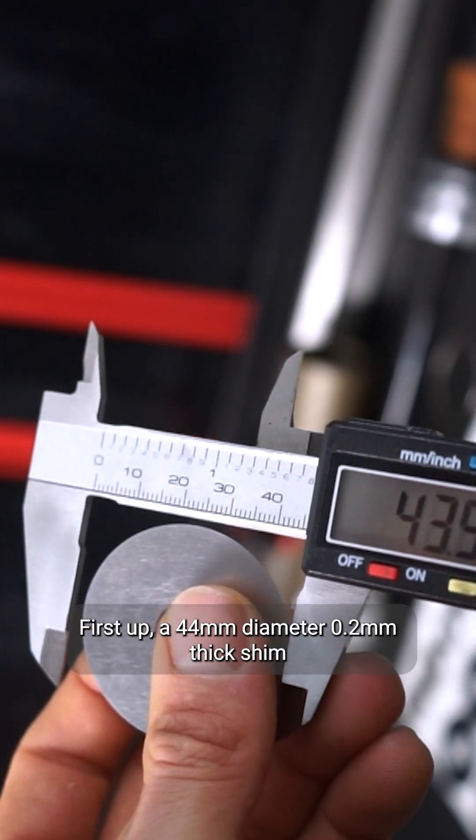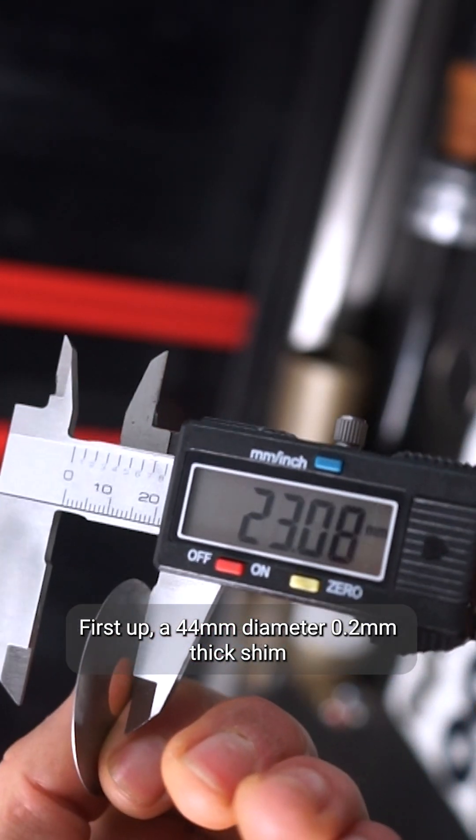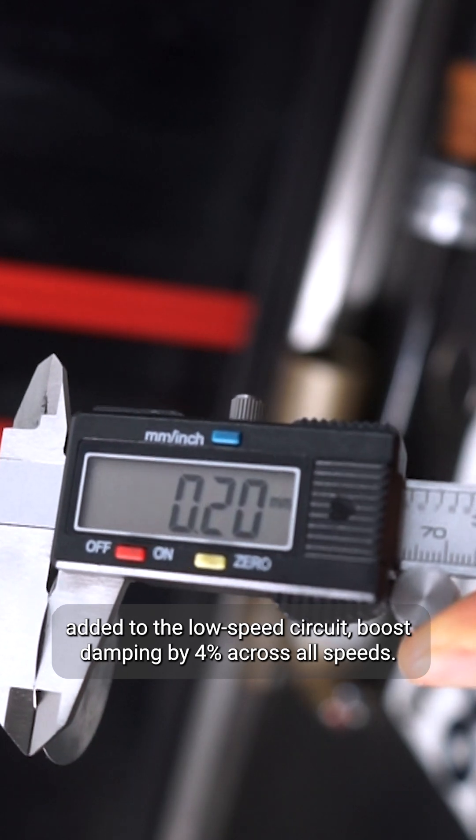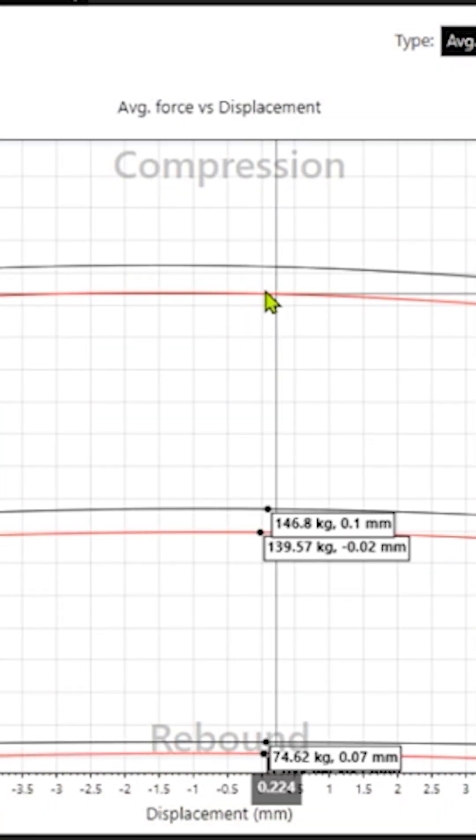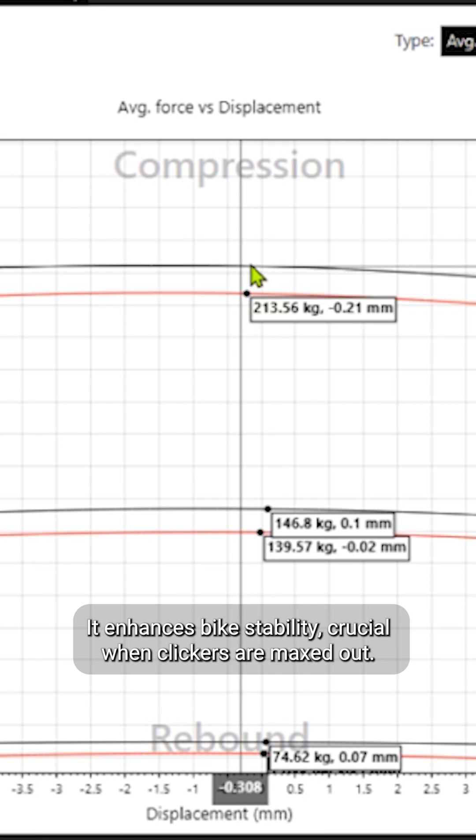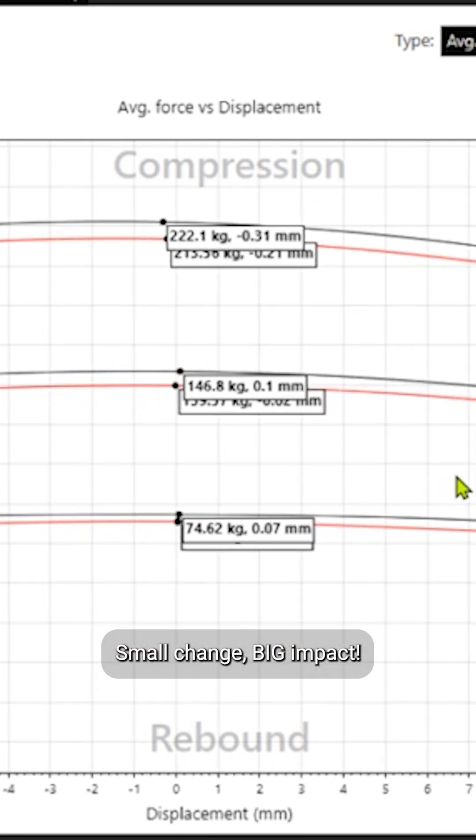First up, a 44mm diameter, 0.2mm thick shim added to the low speed circuit. This boosts damping by 4% across all speeds. It enhances bike stability, crucial when clickers are maxed out. Small change, big impact.